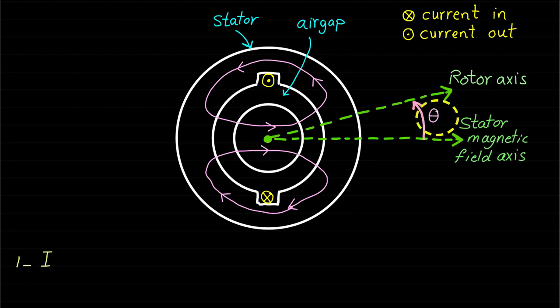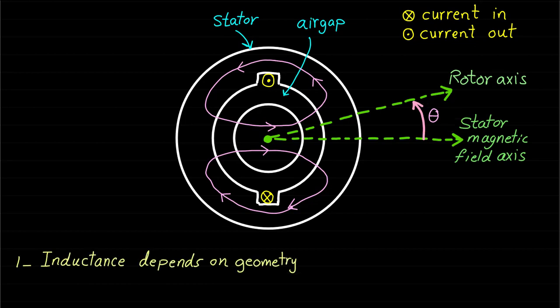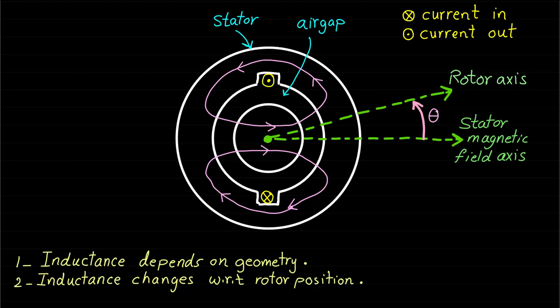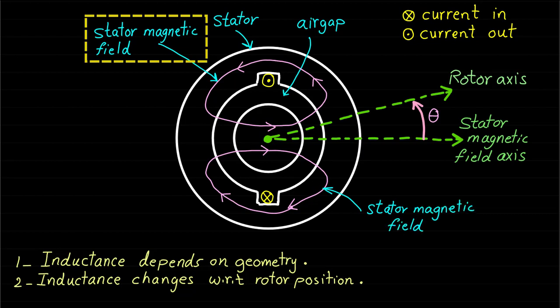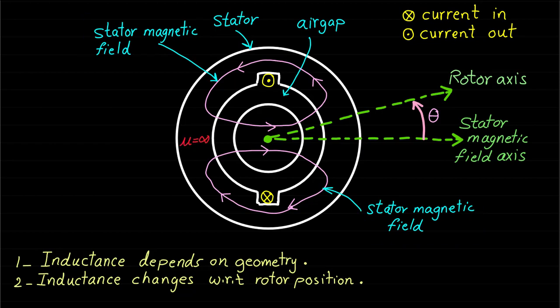We mentioned in a previous lecture that the inductance of a linear magnetic system depends on the geometry only. We also mentioned that the machine is able to develop torque only if there are some inductance changes with the rotor position. If we look carefully at this machine configuration, we can easily notice that the geometry of this machine does not change if we rotate the rotor. That means the stator magnetic field paths will always see the same physical magnetic materials and air gap lengths if we rotate the rotor. Basically, if we ignore the impact of magnetic material by assuming the magnetic material permeability equal to infinity, the stator magnetic field path will see the same air gap length at any rotor position as shown.